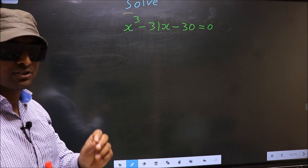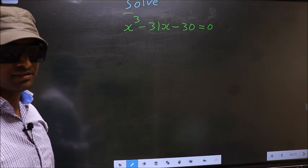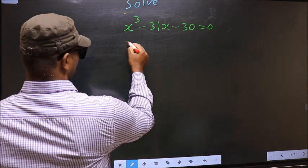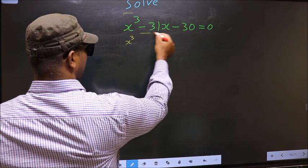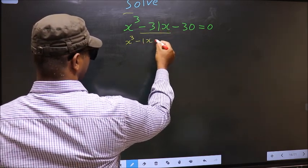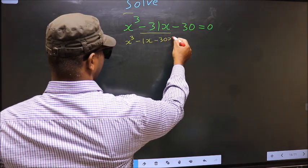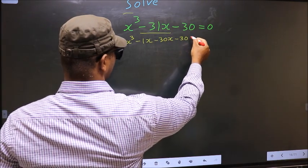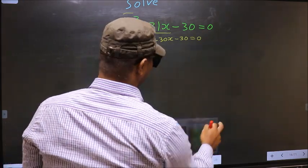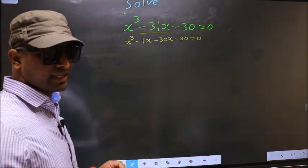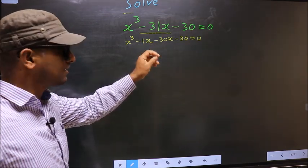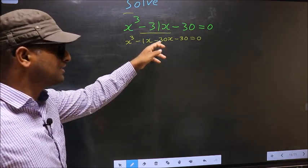For that we should change the x term. So in place of minus 31x, I write minus 1x minus 30x minus 30 equal to 0. In place of minus 31x I have written minus 1x minus 30x.